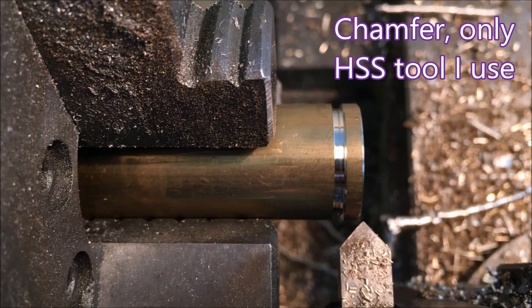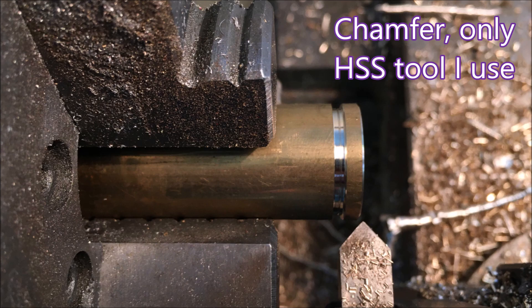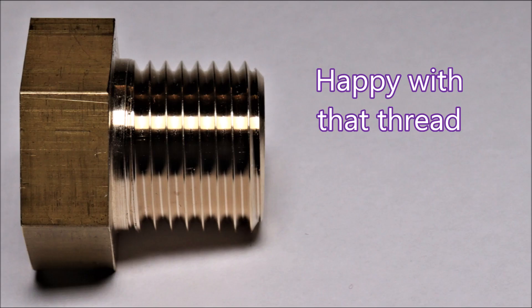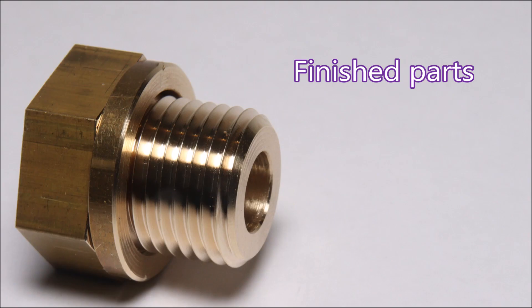This is just making the washer. I drilled straight in with a 16.5 drill. Yeah, that's the only high-speed steel tool I use, just for doing a bit of chamfering. Happy with that thread, that looks okay.